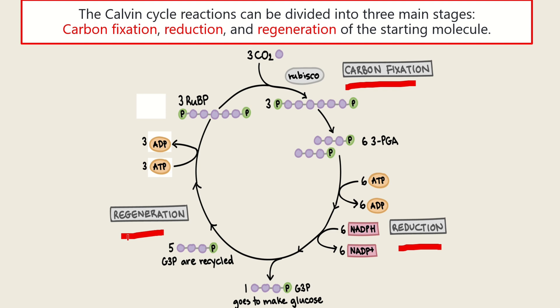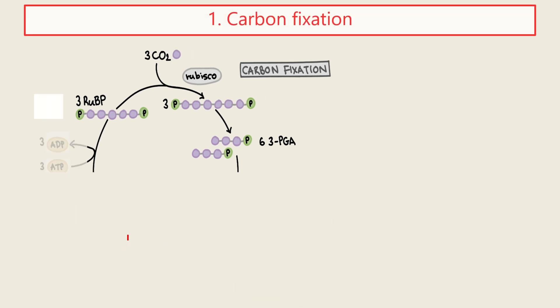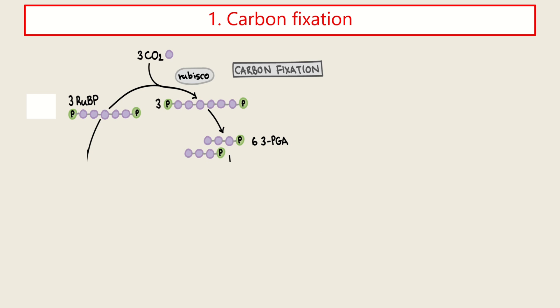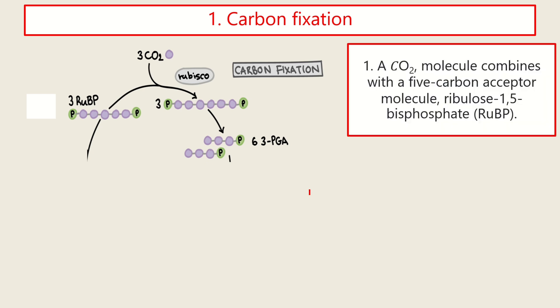The first stage is the carbon fixation. A carbon dioxide molecule combines with a 5-carbon acceptor molecule, which is the ribulose 1,5-bisphosphate or RUBP. So in the first stage, the RUBP molecule is combined with the carbon dioxide. If you can see here, we have here three molecules of carbon dioxide and three molecules of RUBP.